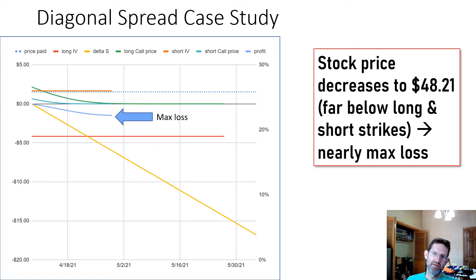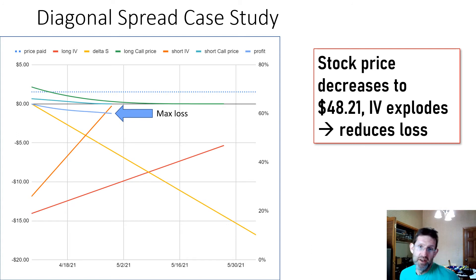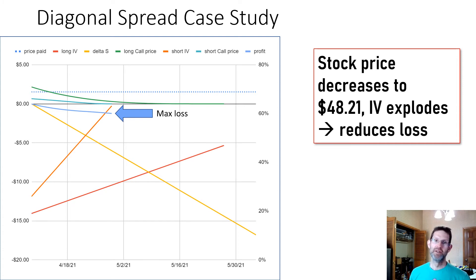What if the stock price declines hugely, way below the strike of either the long or short option? Then the value of both options would decline nearly to zero and we'd be at or close to the max loss of $1.51. However, this is actually unrealistic. If the stock price drops by 12% in a couple of weeks, IV would explode — it would probably triple from these historic lows. In that case, the spread is still worth nearly 30 cents when the short option expires, so our loss is reduced by 20%. In most cases we would have exited this trade long before this point. If IV explodes, I'm probably going to ditch the diagonal spread and move back to a short premium strategy.